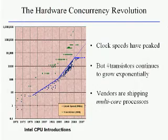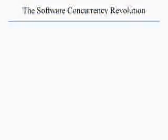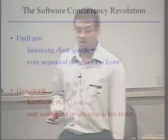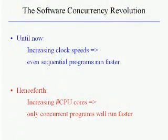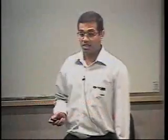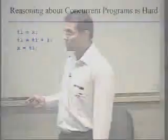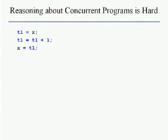These two trends indicate that vendors — not just Intel but others as well — have begun shipping so-called multi-core processors: processors with multiple CPUs packed on the same chip. Until now, clock speeds were increasing exponentially, so even sequential programs ran faster every year. But in the future, as more cores are added, primarily concurrent programs will benefit, meaning more software will become concurrent to gain performance from increasing CPU cores.